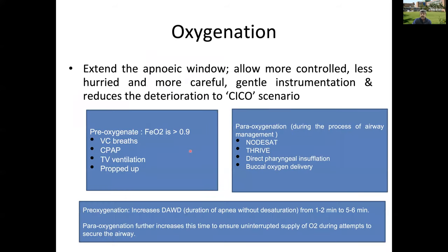Whatever airway technique or device we use, oxygenation is the key. Patients die not because of failure to intubate but failure to oxygenate. We must always pre-oxygenate — the endpoint is end-tidal O2 greater than 0.9. This increases the apneic window, allows more controlled and less hurried instrumentation, and reduces deterioration to a CICO scenario.